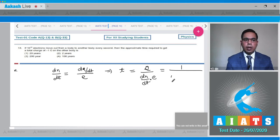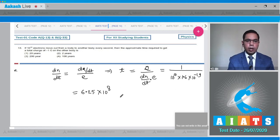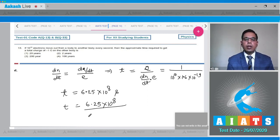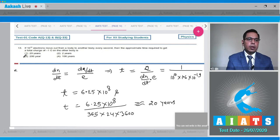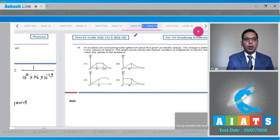Now 1 upon dn upon dt, that is 10 to the power 10, into e is 1.6 into 10 to the power minus 19. After solving that we will get 6.25 into 10 to the power 8 seconds. To convert into years, what will be the time? So time in years will be 6.25 into 10 to the power 8 divided by 365 days in a year, and on each day there are 24 hours, and in 1 hour there are 3600 seconds. On solving these values we will get approximately 20 years. That means option number 1 will be the correct answer.